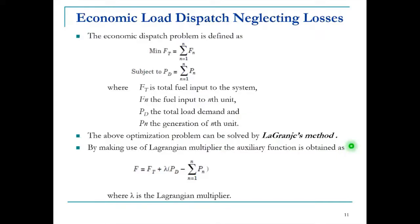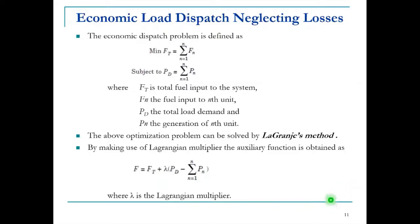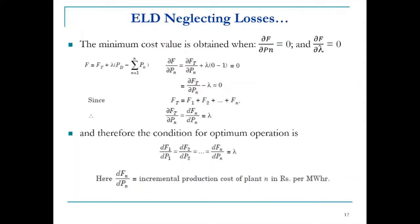Using the Lagrangian multiplier lambda, the Lagrangian function is written as: F = Ft + λ·(PD − ΣPn), where lambda is the Lagrangian multiplier. To solve this optimization problem, we find the solution when ∂F/∂Pn = 0 and ∂F/∂λ = 0.